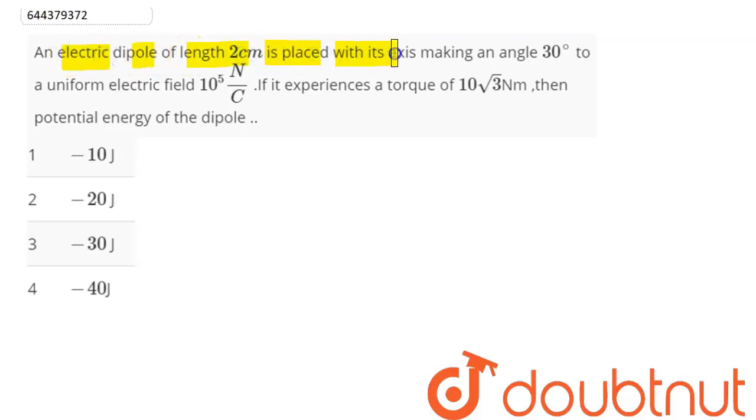The question is: An electric dipole of length 2 centimeter is placed with its axis making an angle 30 degree to a uniform electric field 10 power 5. If it experiences a torque of 10 root 3 newton meter, then potential energy of the dipole is...